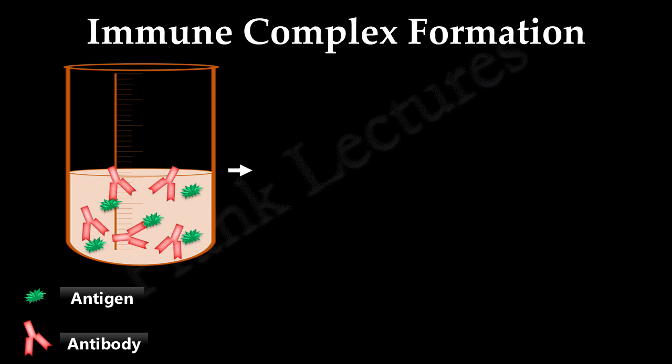Since these antigens and antibodies are complementary to each other, once they come in close proximity they will form non-covalent bonds with each other. This results in small soluble antigen-antibody complexes.